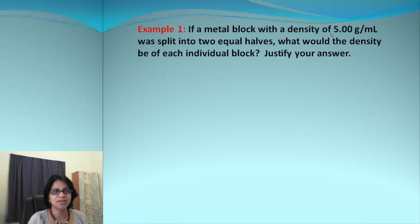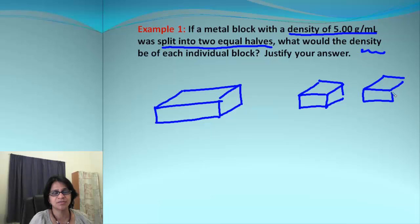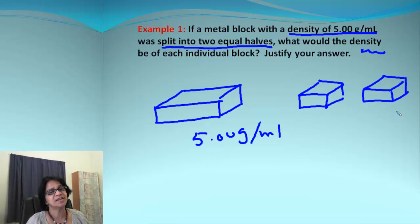In this problem, we have one metal block with density given as 5 grams per milliliter. The question is, we break that block into two equal halves. What happens to density? Imagine we have a block and we break it into exactly two blocks which are equal. Do you think density will become half? This is 5.00 grams per milliliter. Obviously size is becoming half, but will the density be half?